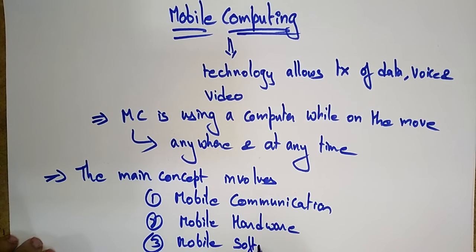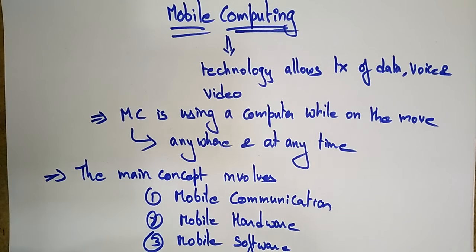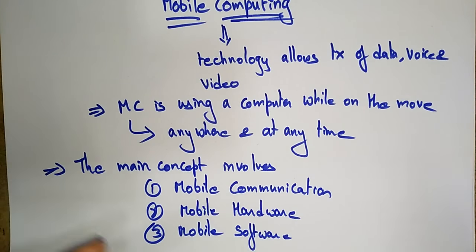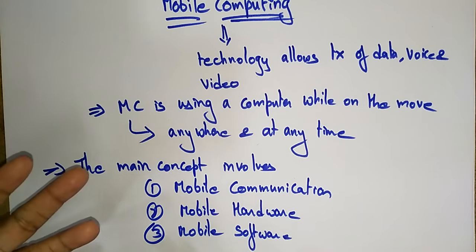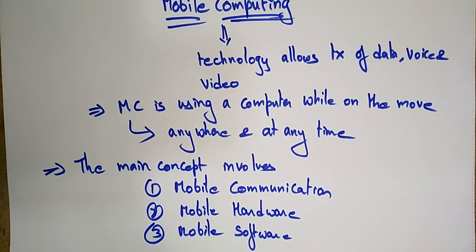Mobile communication means how data is communicated from one device to another — with the help of which service providers and which systems you are transmitting and receiving data, voice, and video calls. Mobile hardware refers to the different types of equipment and hardware devices used in each mobile device. Mobile software refers to the operating system installed on each mobile, like Apple or Motorola, along with the various applications installed on those devices.